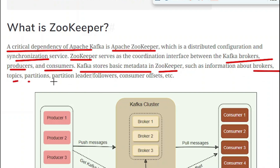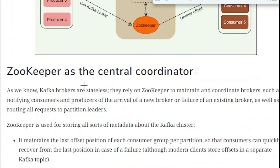Kafka stores basic metadata in ZooKeeper, such as information about the brokers, topics, partitions, leaders, followers, and consumer offsets, along with some additional information. Now let us see how ZooKeeper is acting as a central coordinator.